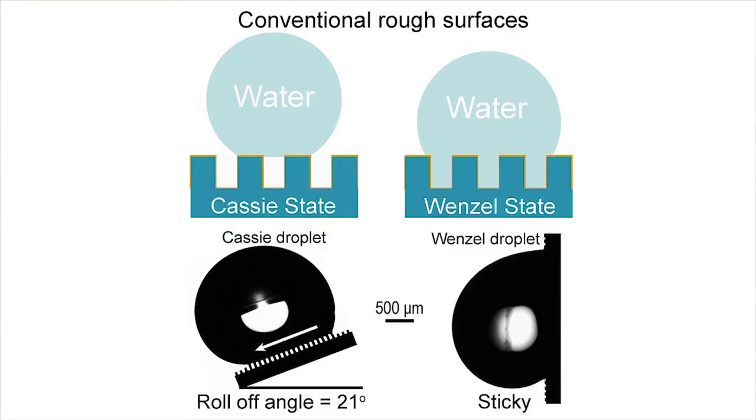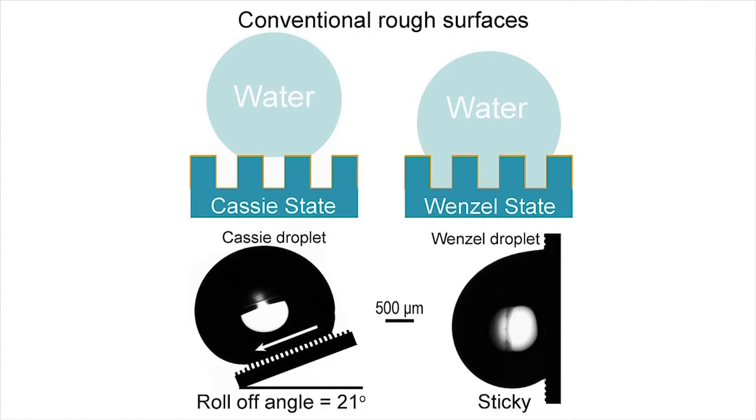Under conventional rough surfaces, the Cassie state droplets are mobile, but the Wenzel state droplets are highly pinned. On our slippery rough surface, both the Cassie and Wenzel state droplets are mobile.